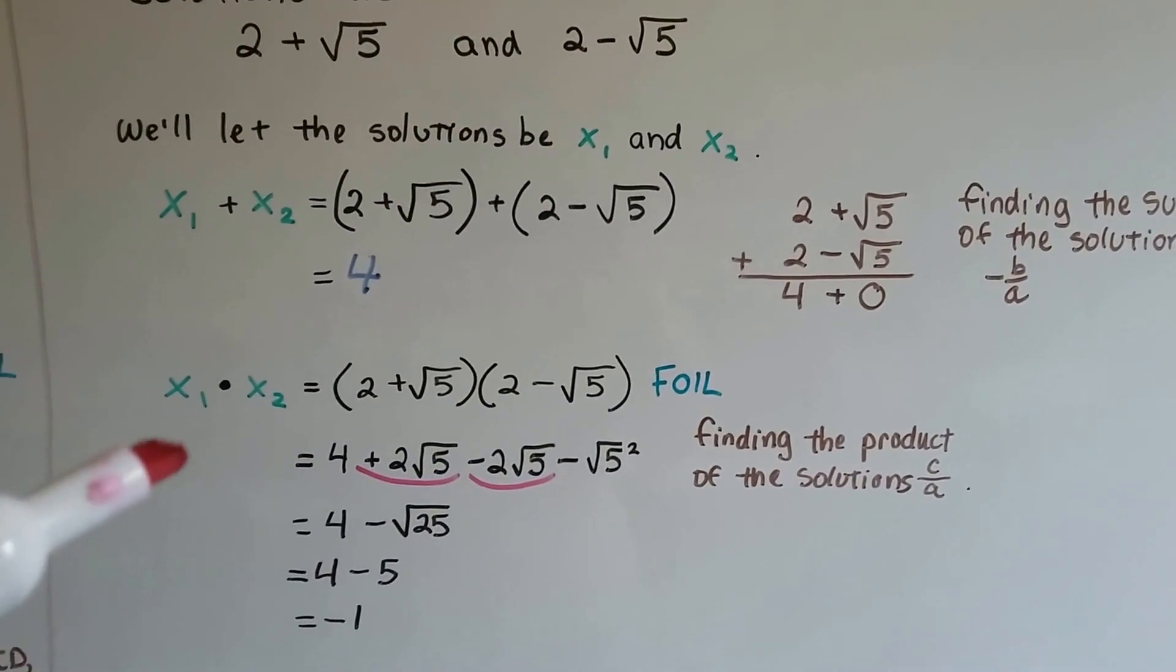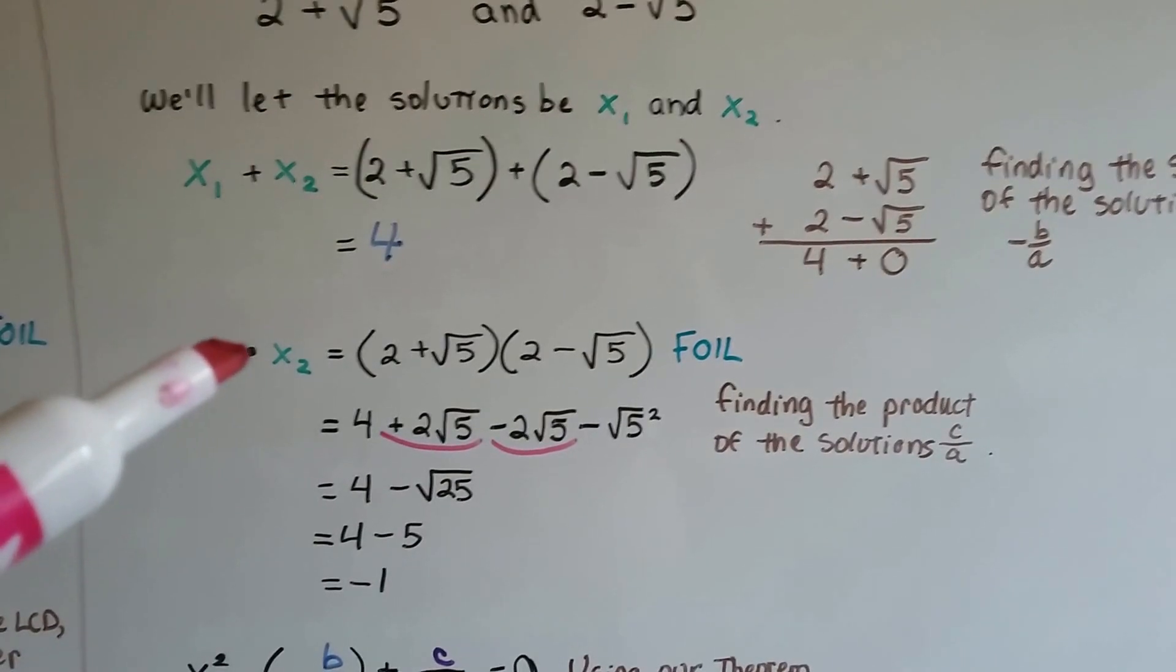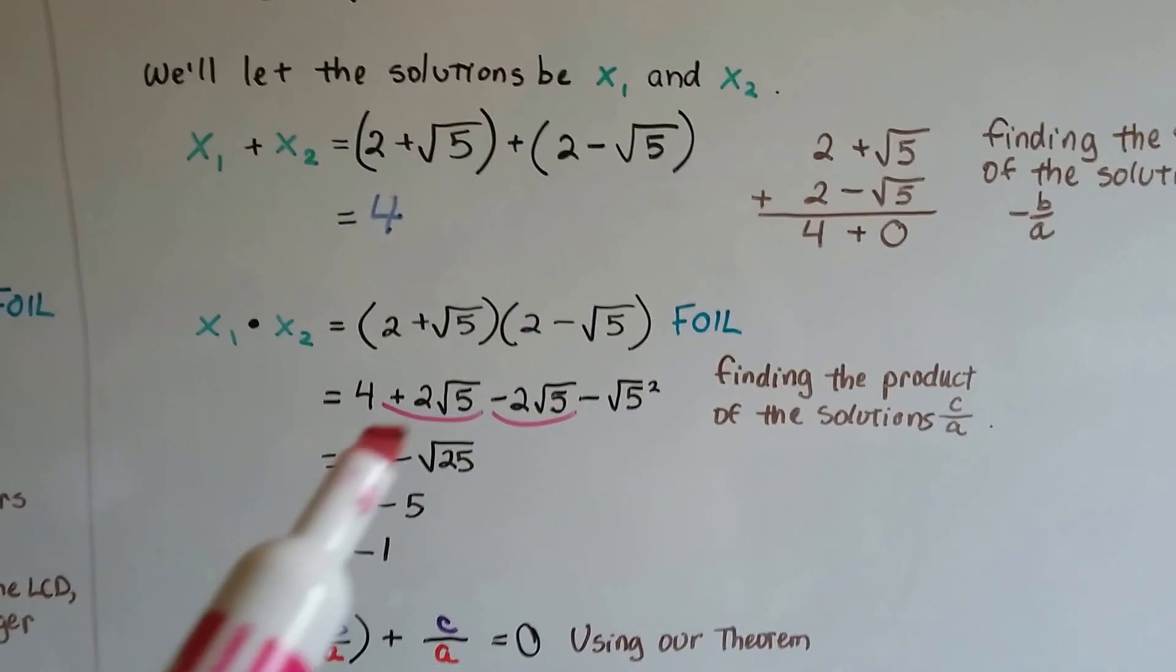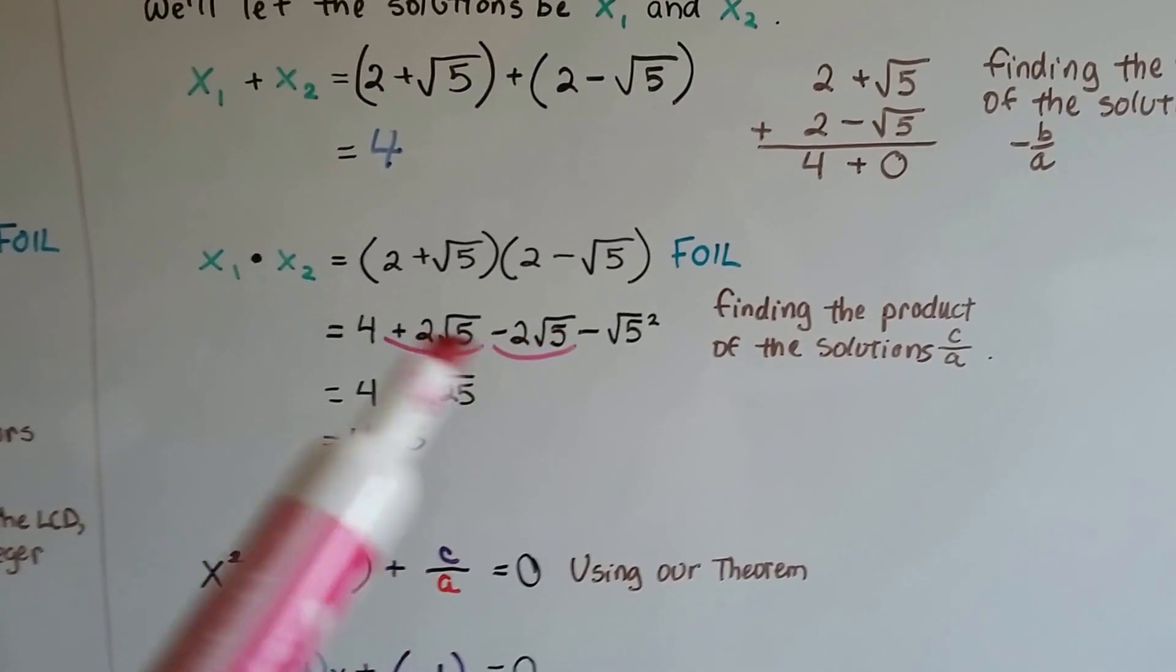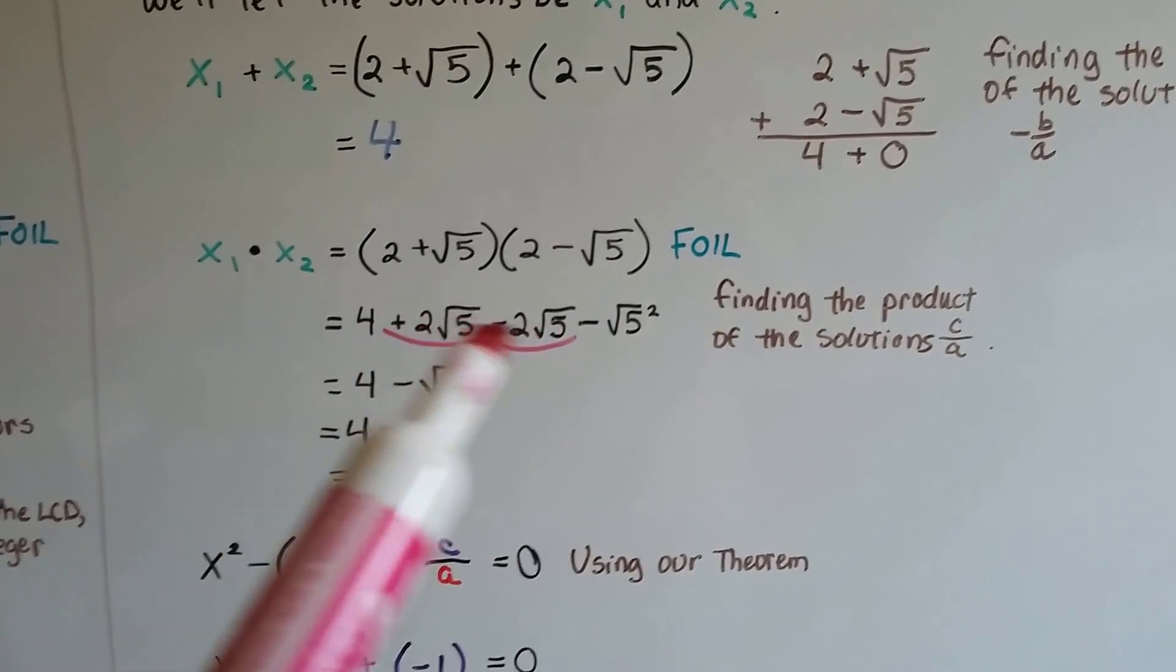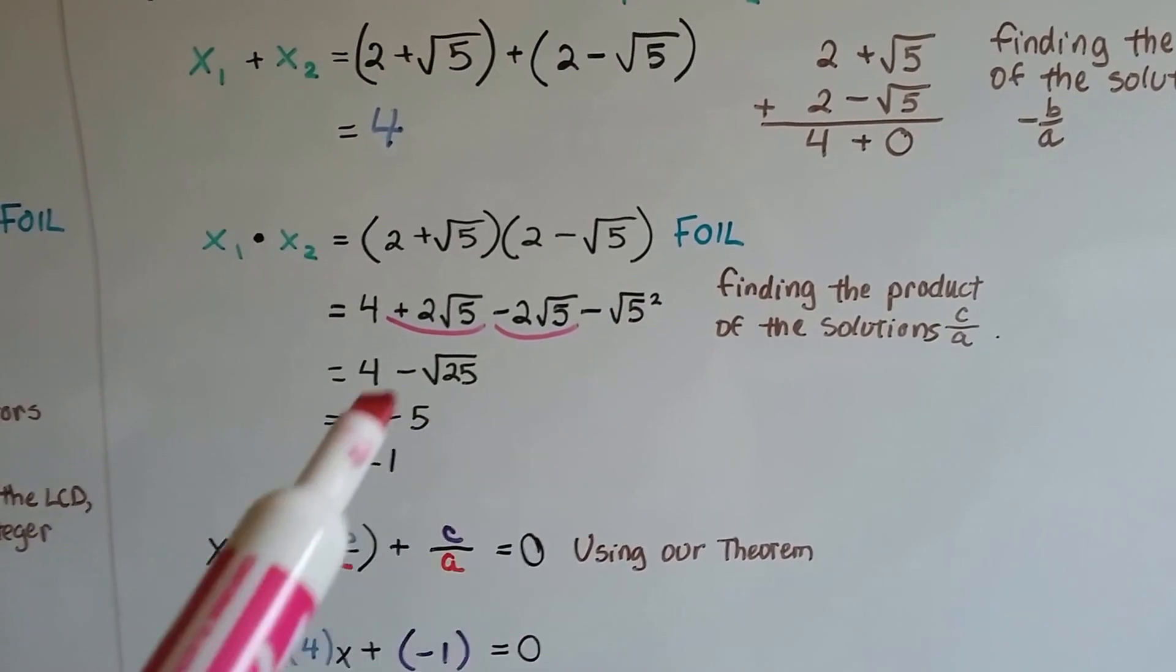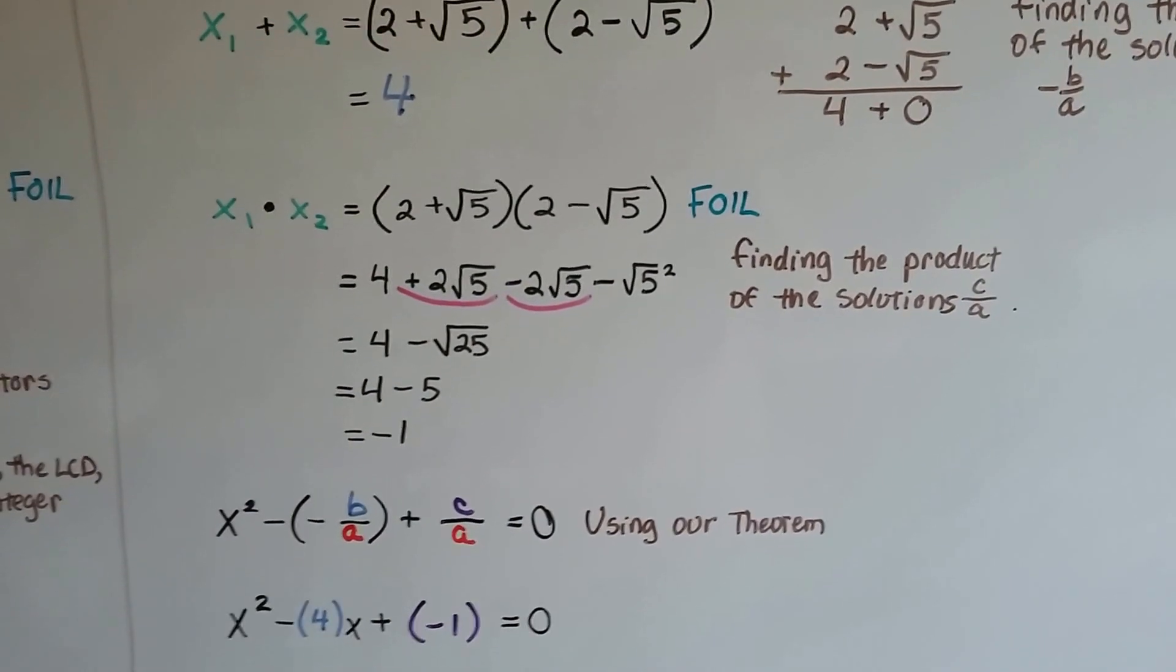Now we need to find the c/a, that product. So we're going to take x₁ · x₂. We FOIL this, and when we do, we get two middle terms that are additive inverses of each other, so we can eliminate them. And we subtract √5 squared, which is √25, which is 5. So we have 4 - 5, which is -1.